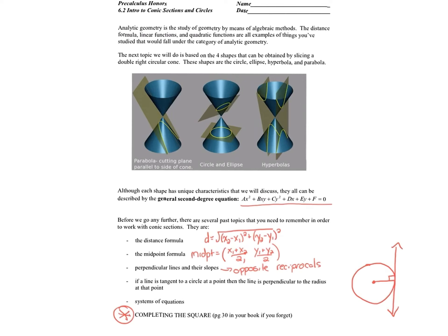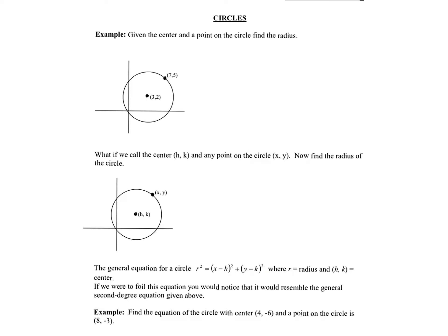The first conic section we're going to talk about today is circles. Some of this should be a review. The definition of a circle is a set of all points that are a fixed distance from a given point. That given point is the center, and that fixed distance is the radius. So if we're given the center and a point on the circle and want to find the radius, we just find the distance between those two points.